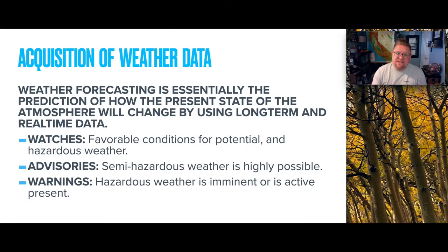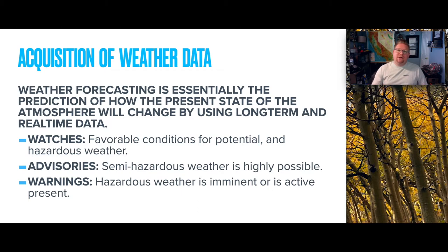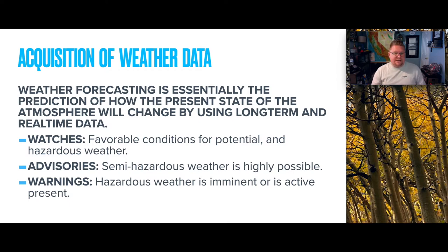To begin, let's discuss the acquisition of weather data and how we categorize it. Weather forecasting is essentially the prediction of how the present state of the atmosphere will change by utilizing long-term and real-time data. We use what is observed today at our weather stations and compare it to long-term data sets — perhaps climate data or regional data — to predict what tomorrow or the day after will be based on those patterns.